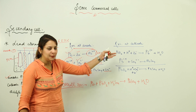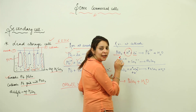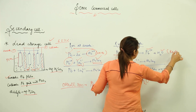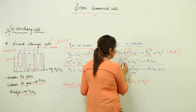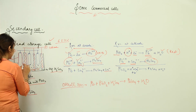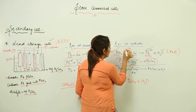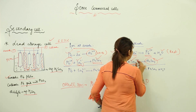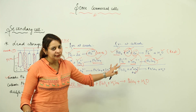At the cathode, the two electrons pass to the PbO₂ grid. PbO₂ combines with the electrons and hydrogen ions from the solution, forming Pb²⁺ and water — a reduction reaction. The Pb²⁺ then reacts with sulfate ions to form PbSO₄, depositing a layer on the cathode as well. The overall cathode reaction is: PbO₂ + H⁺ + SO₄²⁻ + 2e⁻ → PbSO₄ + H₂O.